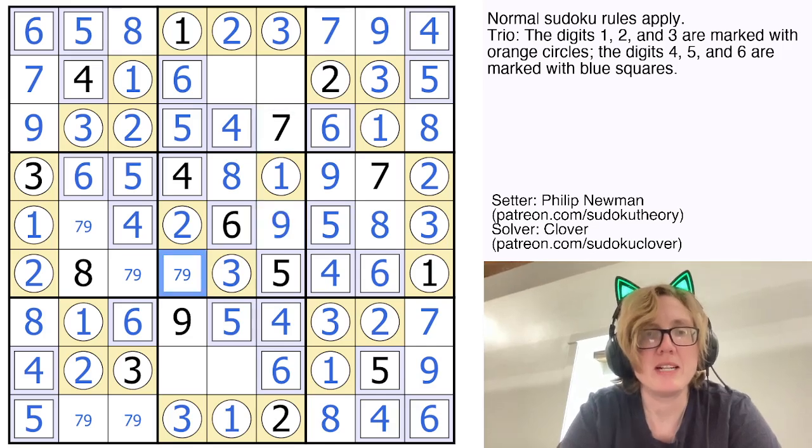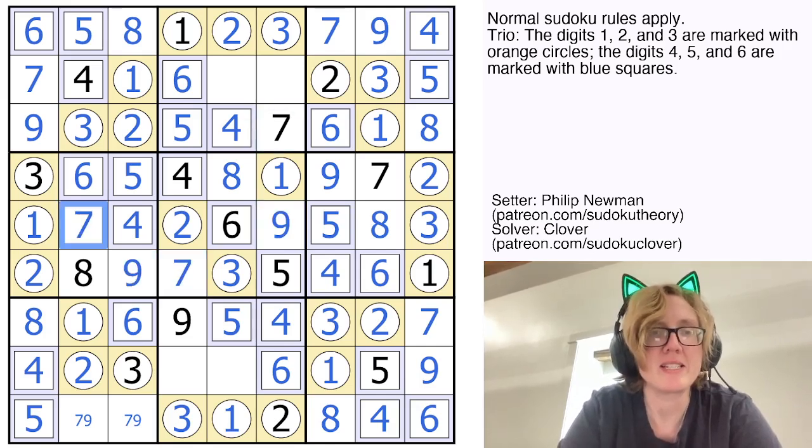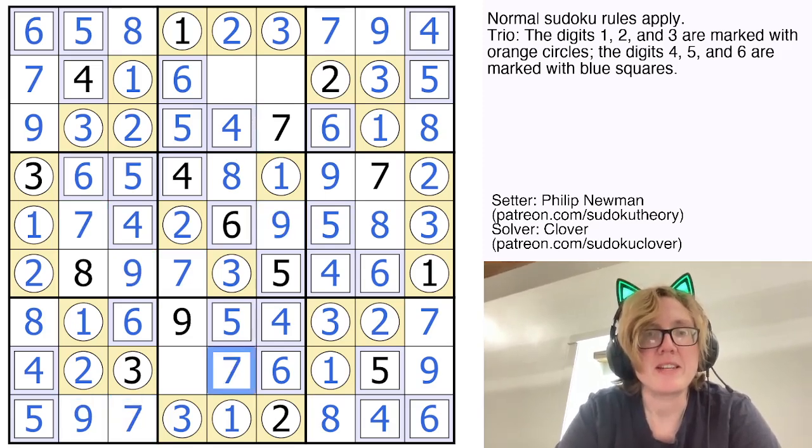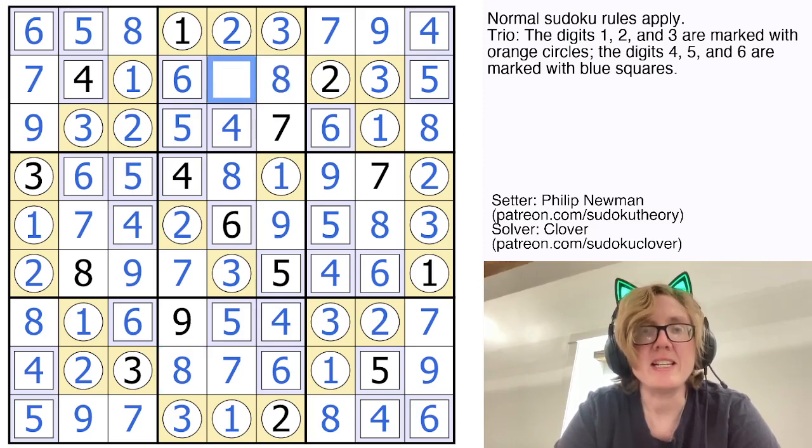And then the 7 in the column makes that a 9, 7, 9, 7, 9 and 7. Here I'm going to need a 7 and an 8, and here I need an 8 and a 9.